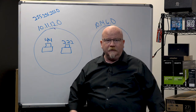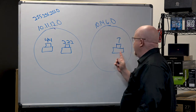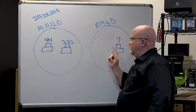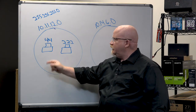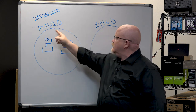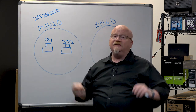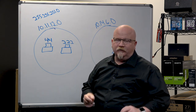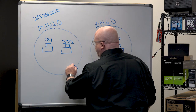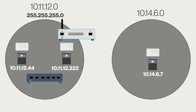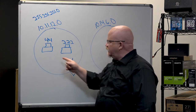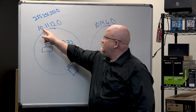That way it can put on the proper MAC addresses and just send it right over — it's a local call. Now let's change the story. Computer 10.11.12.44 wants to talk to 10.14.6.7. When it looks at that address, the 10 matches, but the next two digits don't match — this means it's not on the local LAN. Luckily, any computer connected to the internet is part of a network that also has a router connected to it, and that router will have an IP address on this network — usually 10.11.12.1 by convention.